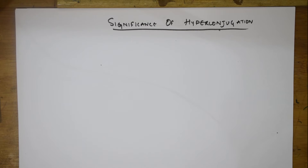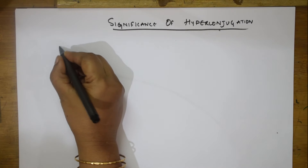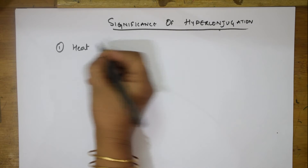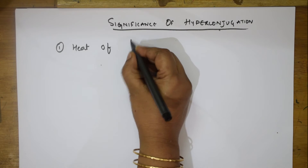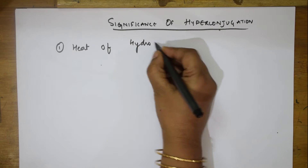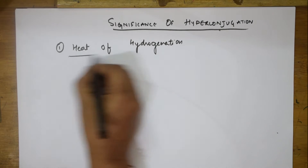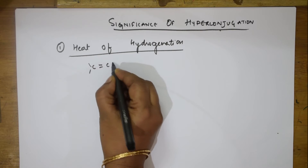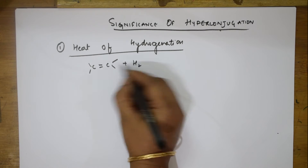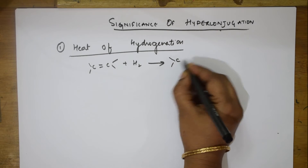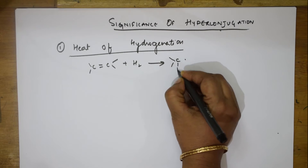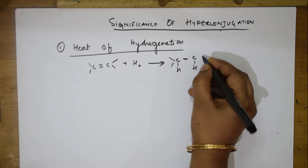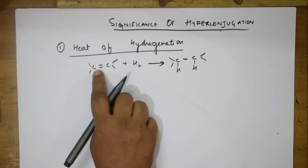So, hyperconjugation — I can apply it in terms of heat of hydrogenation. What is hydrogenation? It is the addition of hydrogen. If I take an example, C double bond C, I am going to add hydrogen. When hydrogen is added, we get C single bond C with H here — hydrogen got added around the double bond.